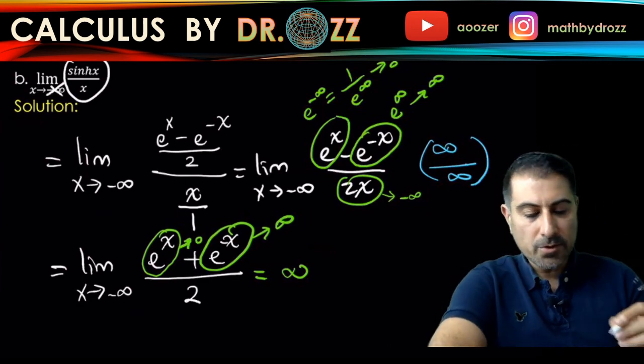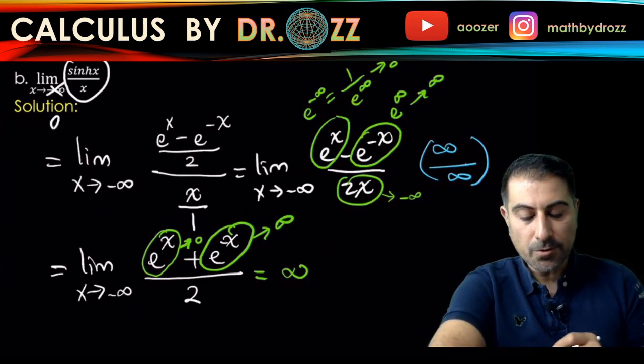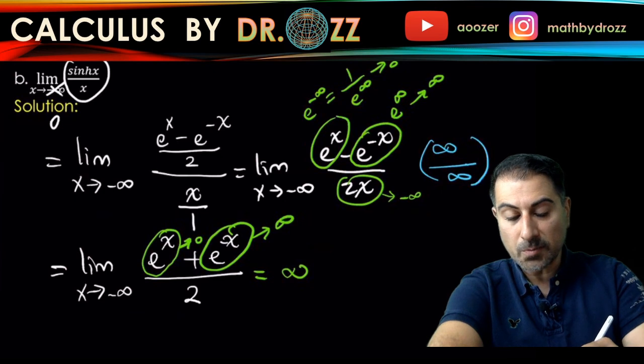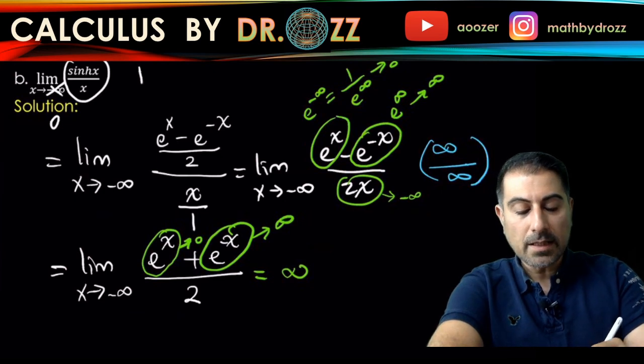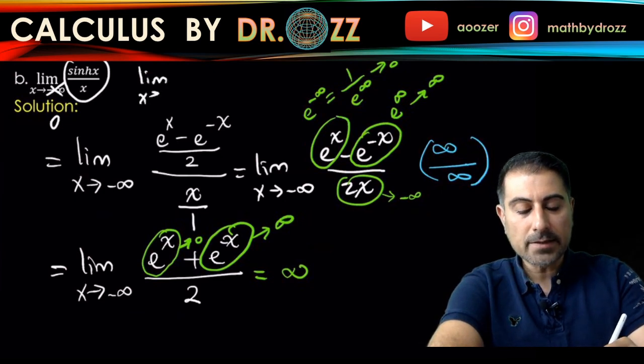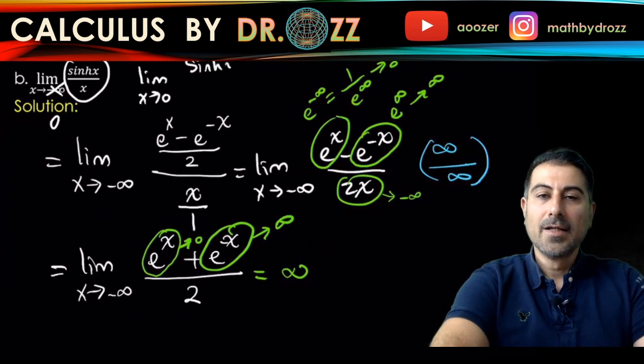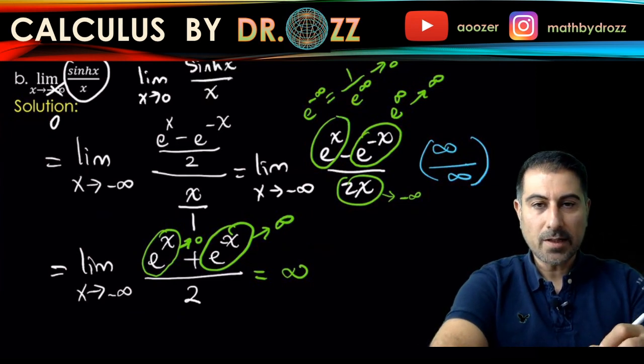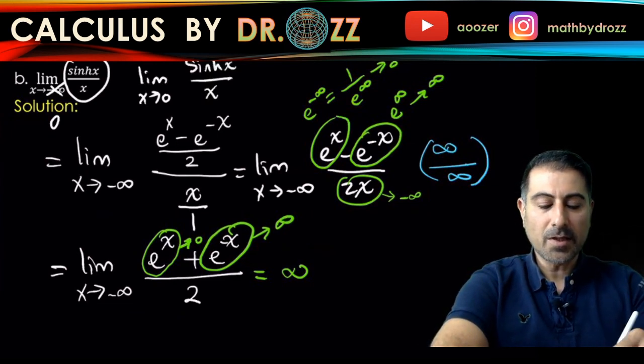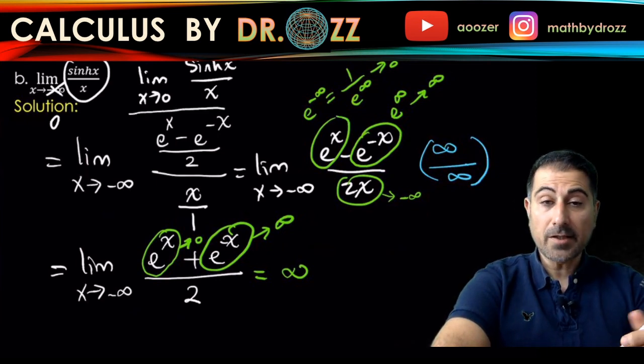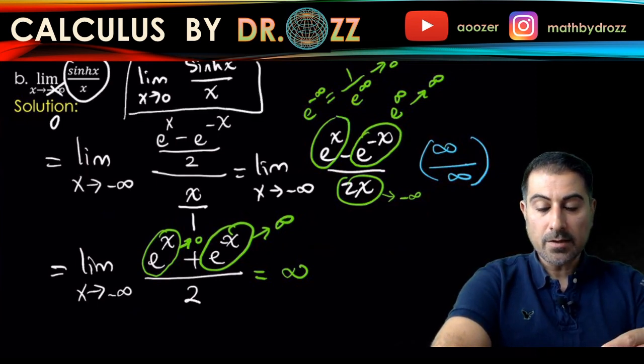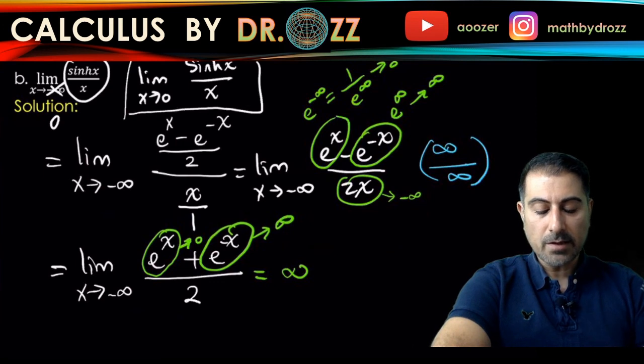In other words, as a brand new problem for you to work on after you're done with this video: sine hyperbolic x divided by x as x approaches zero. Check this out and see what this limit could be. You're going to use the same idea—writing everything in terms of exponentials like we did.